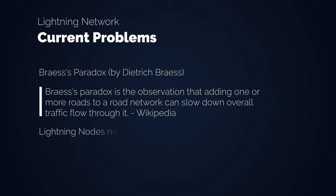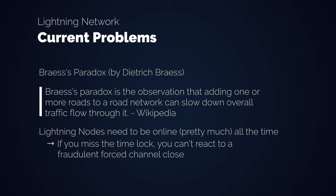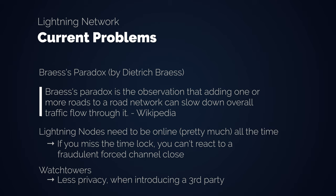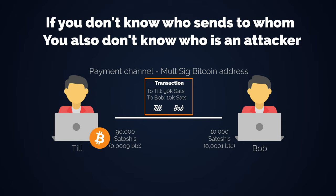Another problem is that Lightning nodes need to be online all the time, otherwise you can't react to fraud attempts. There are time locks, so your node can be offline for some time, but if you miss the time lock you can't react to a fraudulent forced channel closing. A possible solution is so-called watchtowers — a third party watching over your transactions — however they could also be spying actors that want to gain transactional information for marketing purposes. Privacy is a double-edged sword: if you don't know who sends money to whom, you also don't recognize potential attackers easily. This also means that in Lightning you always have a hot wallet and not cold storage.